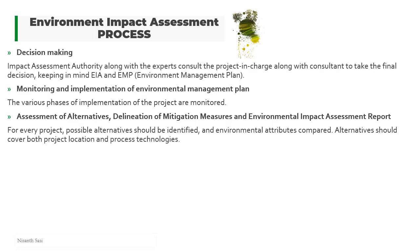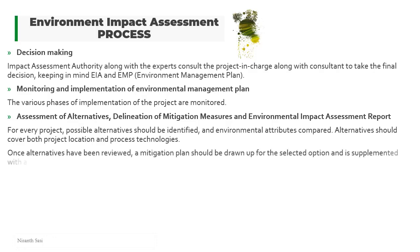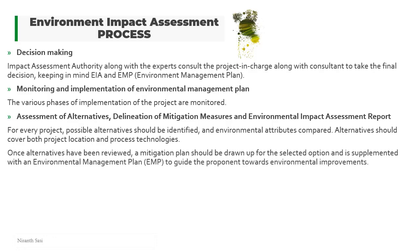If the original plan cannot be implemented, an alternative — a backup plan — should cover both the project location and available technologies. Once alternatives have been reviewed, a mitigation plan should be drawn up for the selected option, supplemented with an environmental management plan to guide the proponent toward environmental improvements.